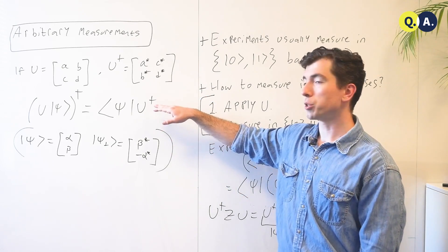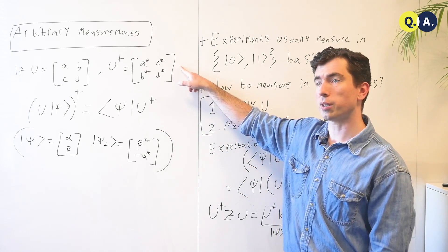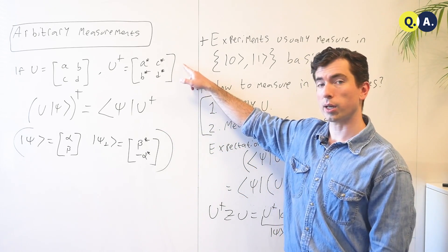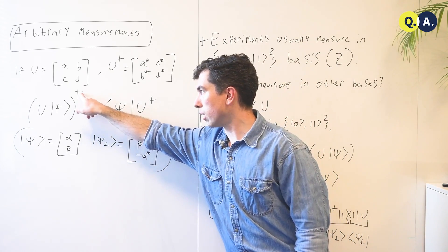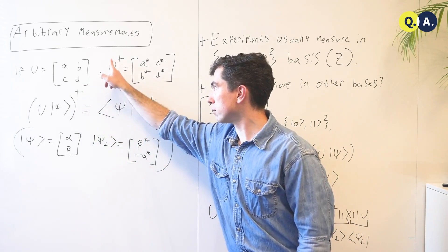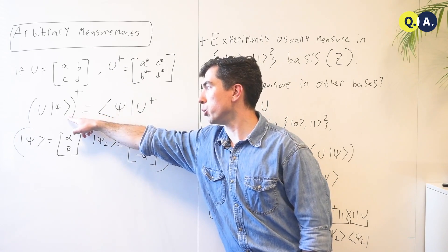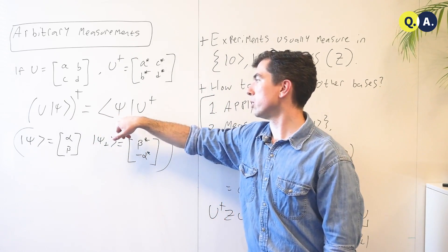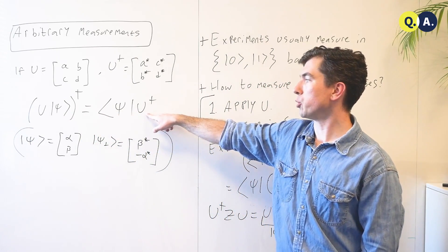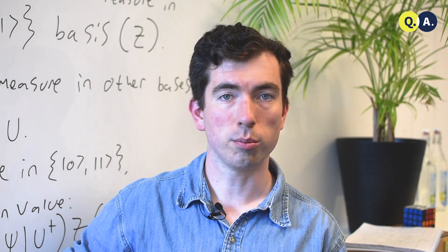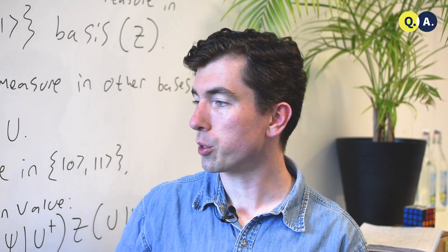A second important fact, which you can prove for yourself using this definition — and I encourage you to do so — is that the dagger, or complex conjugate transpose, of U|ψ⟩ is just the bra ⟨ψ| times U dagger. That follows from linear algebra, but it's easy to check for yourself.